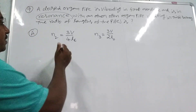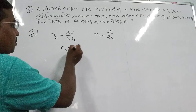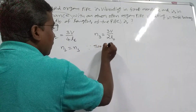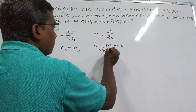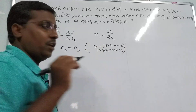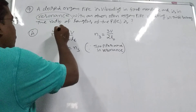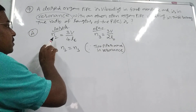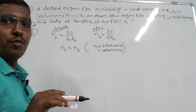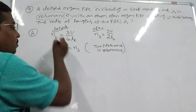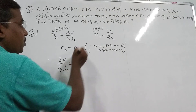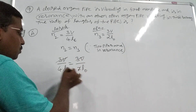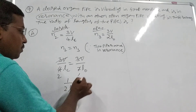Since both pipes are in resonance, N2 equals N3 — both frequencies are equal. So 3V by 4L_c equals 3V by 2L_0. The 3V cancels from both sides, giving 1 by 4L_c equals 1 by 2L_0, which simplifies to 1 by 2L_c equals 1 by L_0.